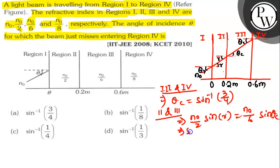So, sin r will be 1 by 3 into 3 by 4 is equal to 1 by 4.